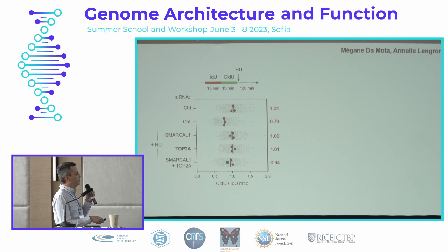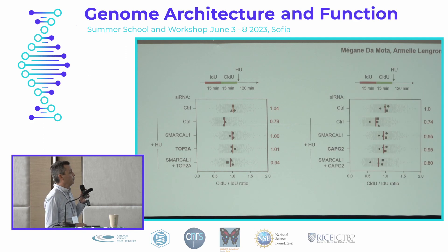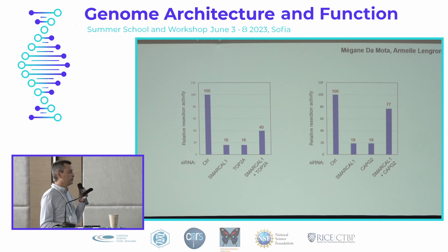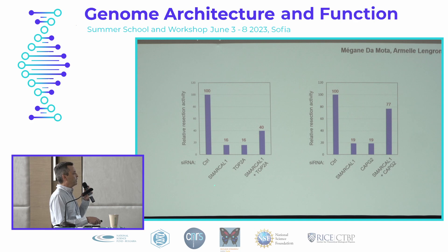Depleting both SMARCAL1 and TOP2A gives a slight rescue, but not very significant. For condensin 2, we get exactly the same result: control cells show resection; without SMARCAL1, no resection; without condensin 2, again no resection. If we combine SMARCAL1 and CAPG2 depletion, we get some kind of rescue. Quantitation confirms that SMARCAL1 and TOP2, or SMARCAL1 and CAPG2, are both required for fork resection — but if we remove both, we largely restore resection.